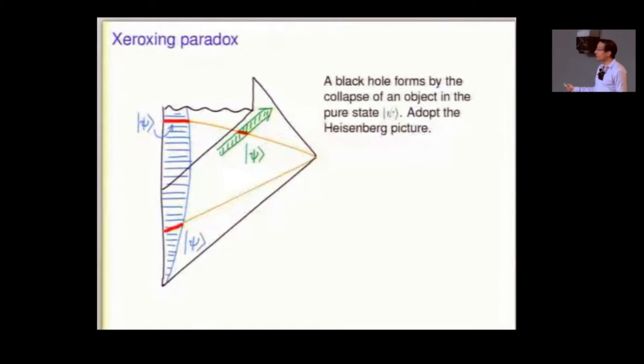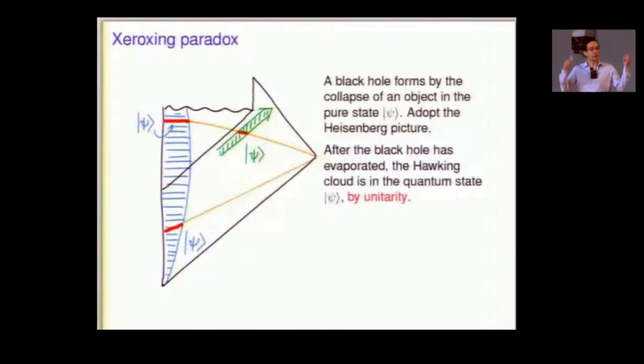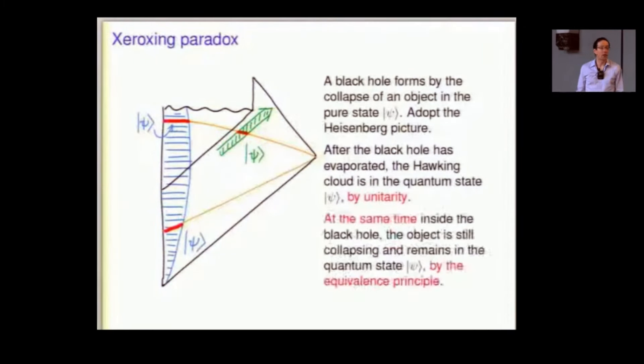We're going to use the Heisenberg picture. So, psi just evolves into psi. So, after the black hole has evaporated, out here you have this green thing. That's the Hawking cloud that's moving out towards infinity. By unitarity, by assumption that we have a unitary S matrix, that's in the state psi. That Hawking cloud is psi. Okay.